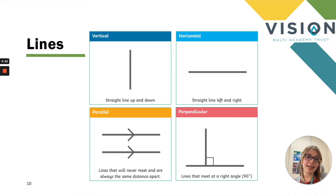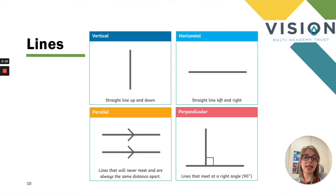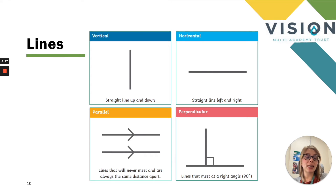So we're looking at lines now. There are four different descriptions of lines that children in year three need to be using accurately. Vertical lines go straight up and down. Horizontal lines go straight left and right along the horizon. Parallel lines never meet and are always the same distance apart — marked with little arrows. If there's more than one set of parallel lines, you increase the number of arrows. Perpendicular lines are lines that meet at a right angle.